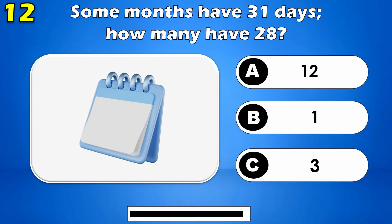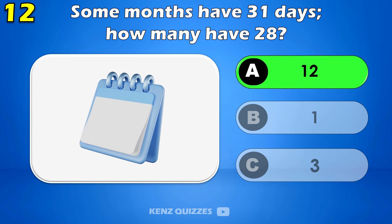Some months have 31 days. How many have twenty-eight? The answer is 12 — all months have at least 28 days.